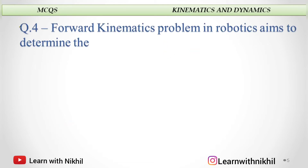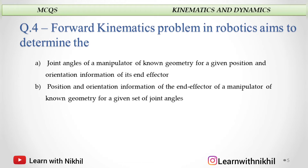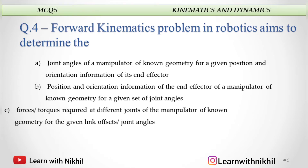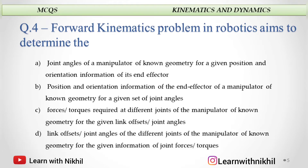Next question: forward kinematics problem in robotics aims to determine the joint angles of the manipulator, position and orientation information, forces or torques required, or links and offset or joint angles of different joints. The answer is position and orientation information of the end effector of a manipulator of a known geometry for a given set of joint angles.